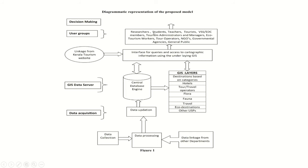Users of the proposed system include researchers, students, teachers, tourists, agencies, and the general public. Decision making is facilitated through the system. This is the diagrammatic representation of the proposed GIS model for Kerala tourism.